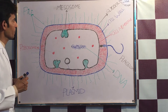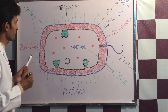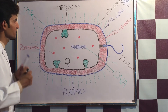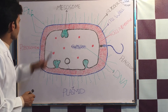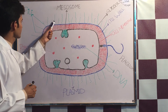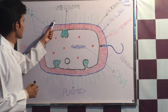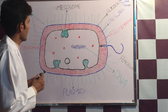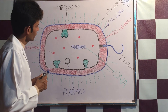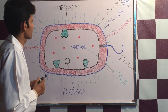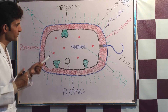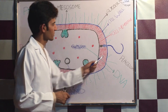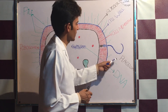Fimbriae help the bacterium attach to other surfaces, such as cellular surfaces where the bacteria cause disease, or the surfaces of other bacteria. The bigger pili are called sex pili or F-pili, which help during the process of conjugation — the transmission of genetic material from one bacterium to another.